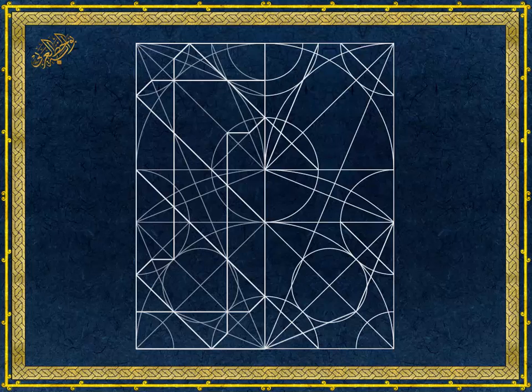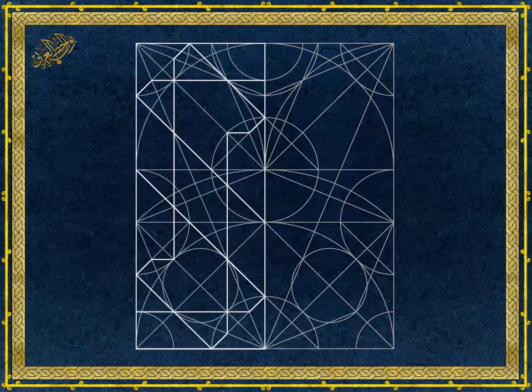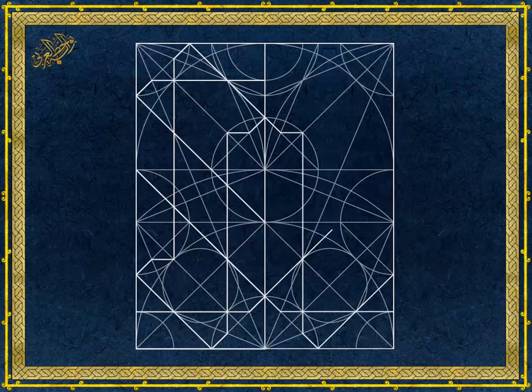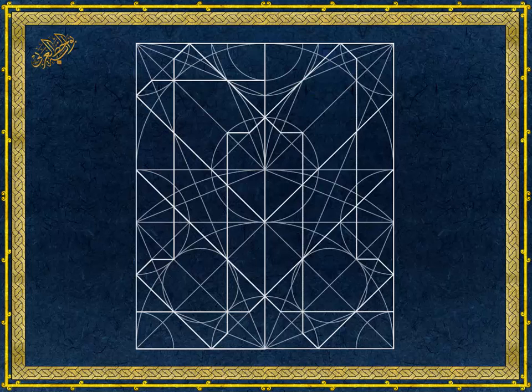You can also draw the full pattern by drawing the secondary rectangle first and divide it into four equal rectangles. Then you simply mirror all the steps along the vertical and horizontal dividing lines.